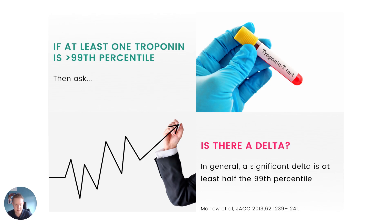That's the delta I'm talking about on this slide. In general, a significant delta is at least half the 99th percentile of the assay. So if your upper reference limit is 14 nanograms per litre, then around 7 nanograms per litre would be a significant change — that's a rule of thumb. It's better to know the evidence for your specific assay, and it's better to use an absolute change — maximum minus minimum value — rather than a percentage change, as that seems more sensitive for detecting acute injury.